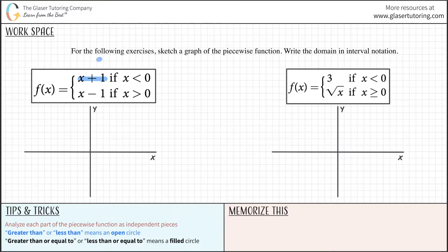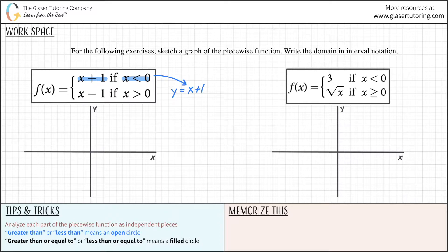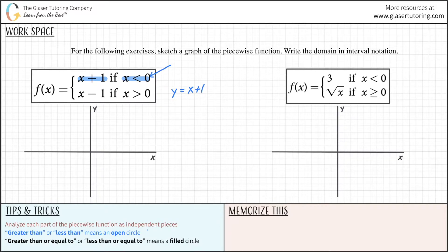We're only going to use this function if x is less than 0. So let's write out the equation. I'm going to use y instead of f(x) — it's the same thing. So y equals x plus 1. Now I'm going to plug in x equals 0. I know it can't be equal to 0, but anytime I have a less than or greater than sign, I'm going to use an open circle at that point.